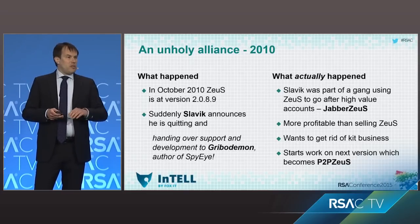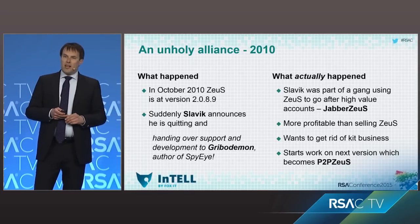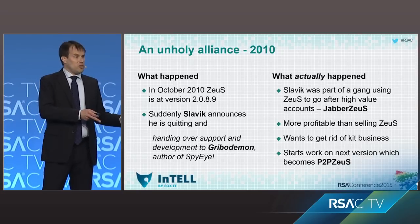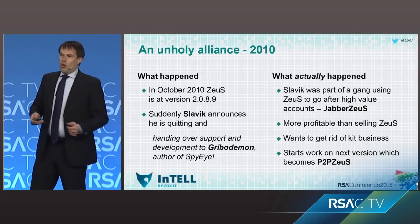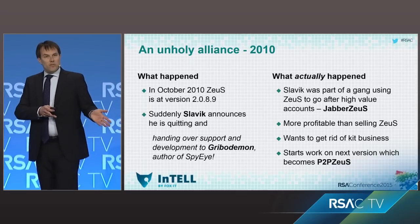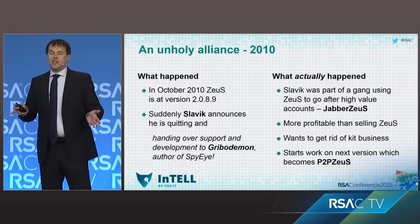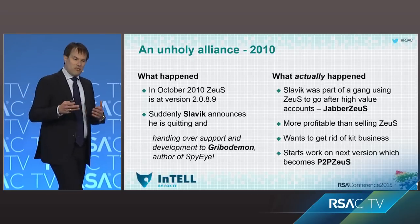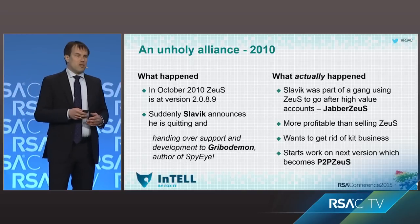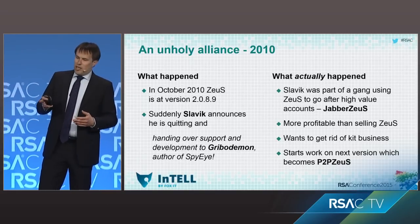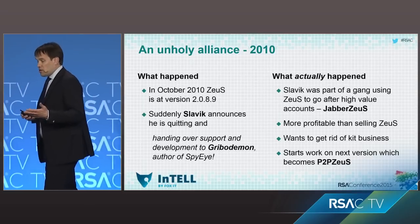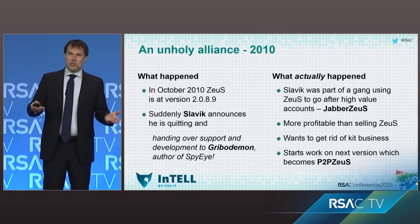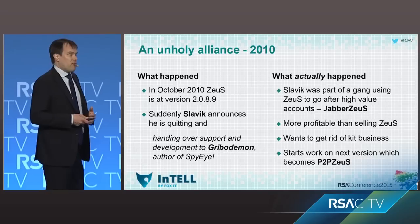So Slavic decided he wanted to be rid of the whole kit business. By giving it all to Gribodemon for free, all the attention switched to Gribodemon and he was free to continue developing Zeus further — but this time only delivering it to the Jabbersews crew. He started on the next version, which morphed into peer-to-peer Zeus, or Game Over Zeus. The Jabbersews crew kept on using it, and we started calling them the Game Over Zeus crew from then on.